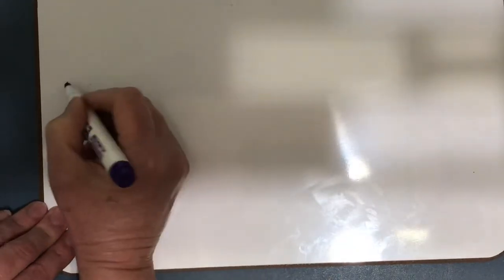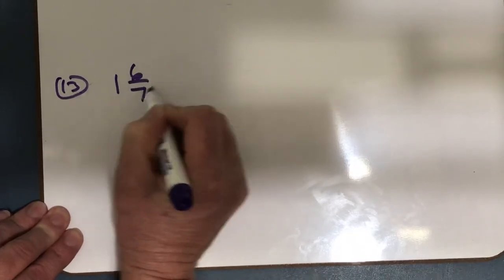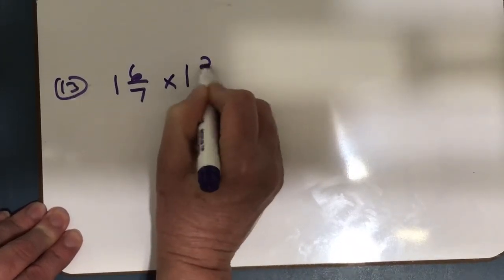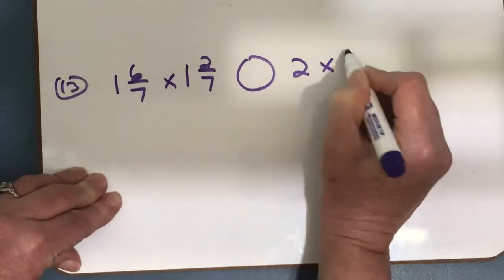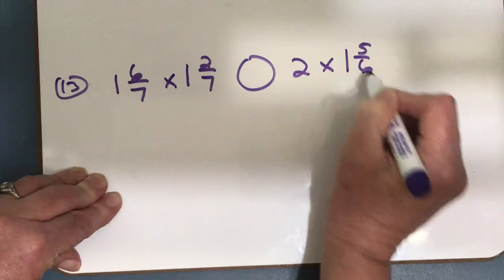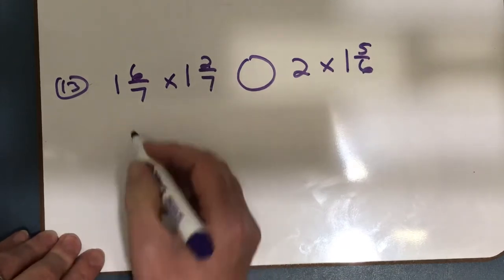Now I'm going to go down to the bottom. Number 13, you have to solve both sides and then compare. So I have 1 and 6 sevenths times 1 and 2 sevenths, and I'm going to compare that to 2 times 1 and 5 sixths. So the first thing I need to do is make both of these into improper fractions.